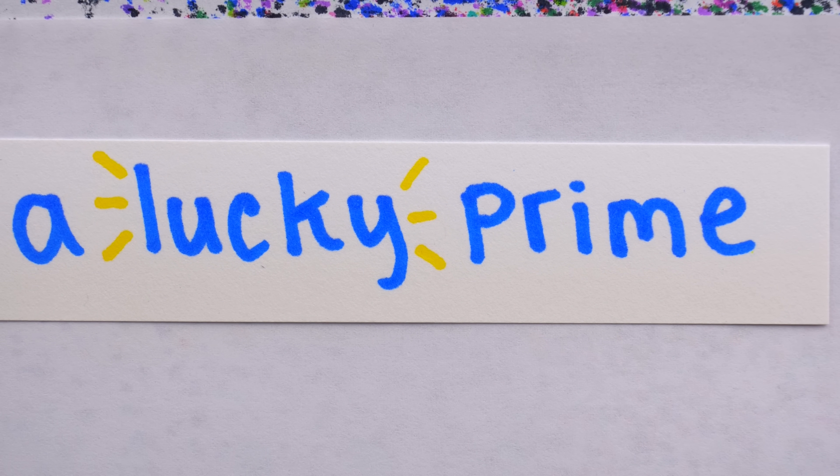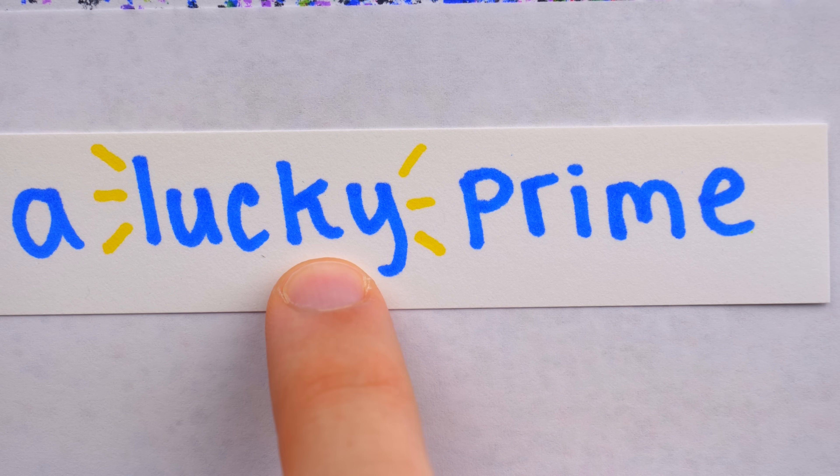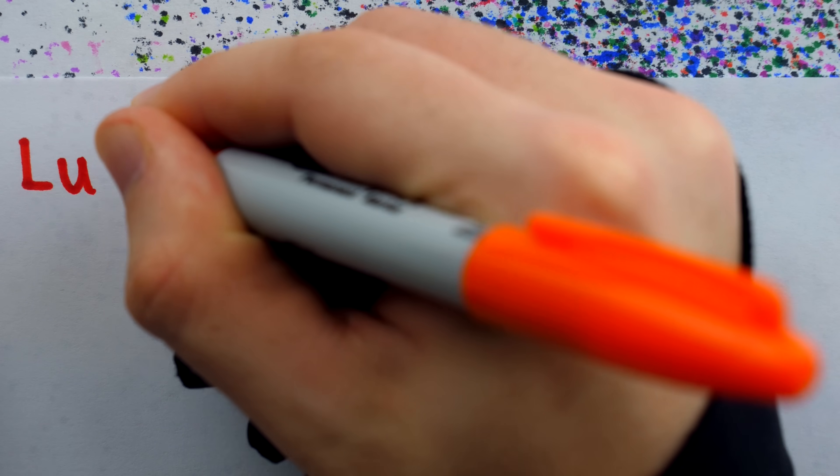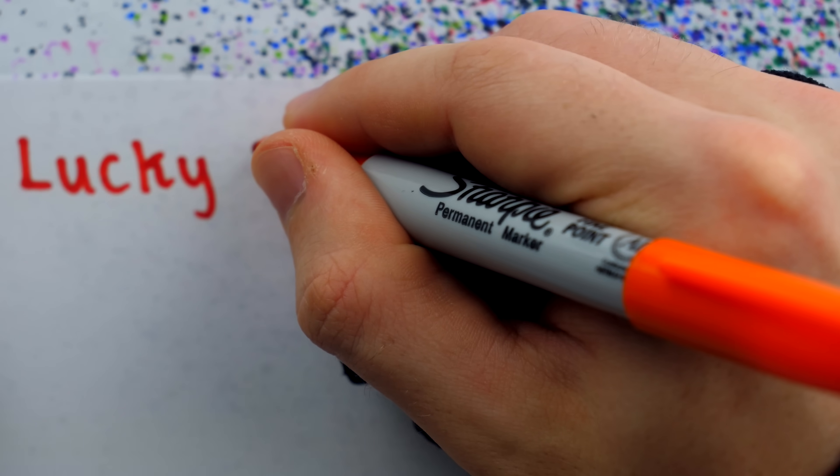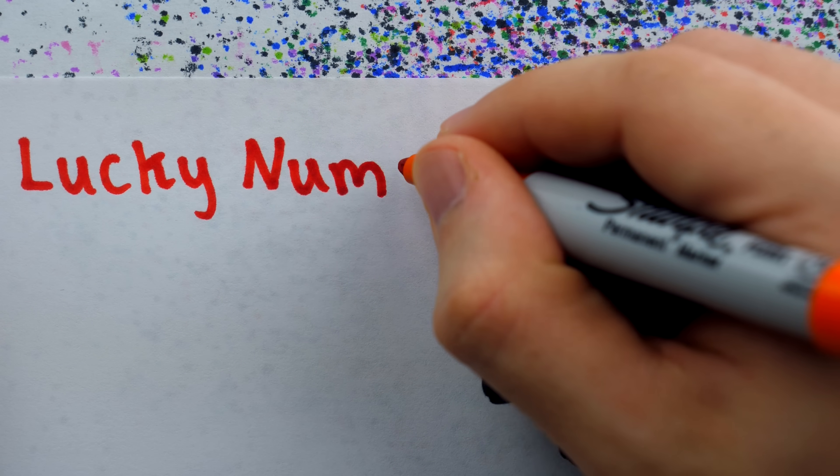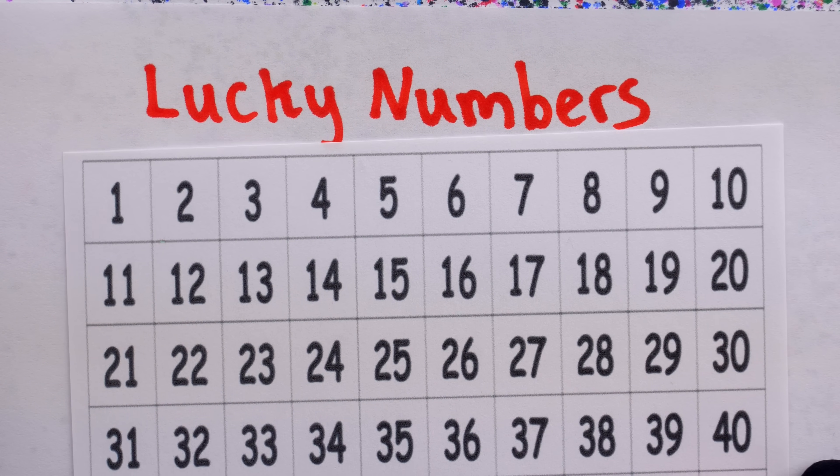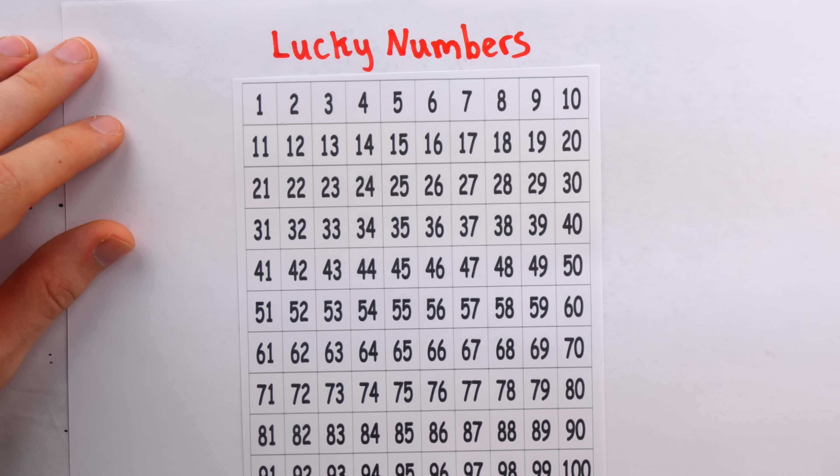A lucky prime is, go figure, a lucky number that happens to be prime. The so-called lucky numbers are generated by a sieving process similar to the sieve of Eratosthenes. You start by writing out the numbers as far as you like, let's say all the way up to 100.